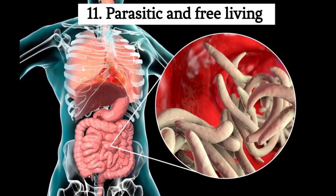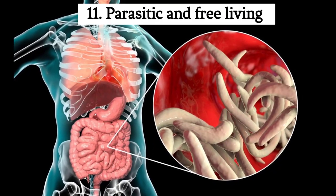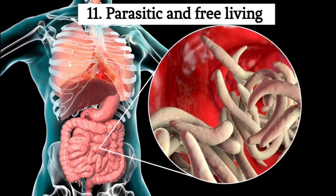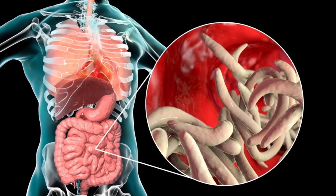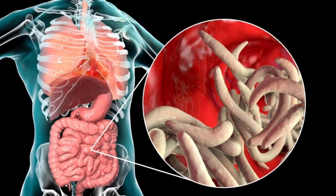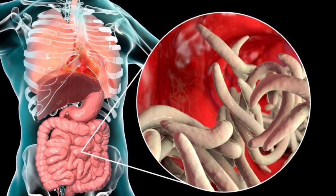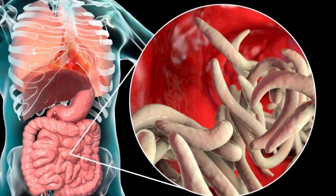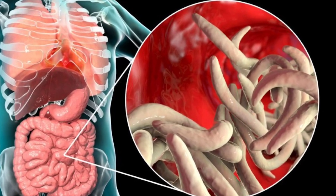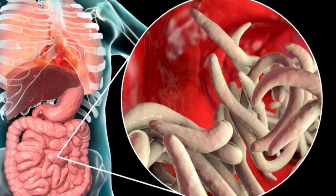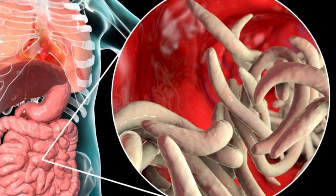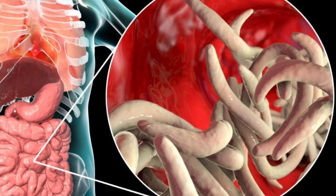Parasitic and free-living. Nematodes have diverse lifestyles. While some are free-living in soil and aquatic environments, others are parasitic and can infect a wide range of hosts, including plants, animals, and humans.